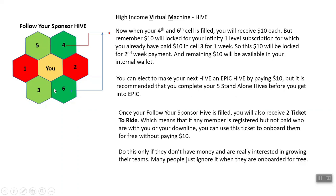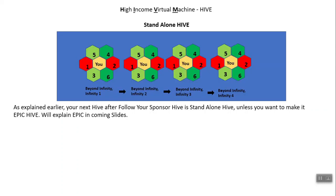Once your Follow Your Sponsor Hive is filled — meaning all six cells are filled — you will additionally receive two tickets to ride. If any member is registered but not paid, who are in your downline, you can use this ticket to onboard them for free without them paying $10. It is like paid forward, but only use this if they don't have money and are really interested in growing the team. Many people who join for free ignore it and take no action, which creates overhead for you. Your next hive after the Follow Your Sponsor Hive is the Standalone Hive, and there are four standalone hives. Unless you make it an Epic Hive, they will be by default standalone hives.